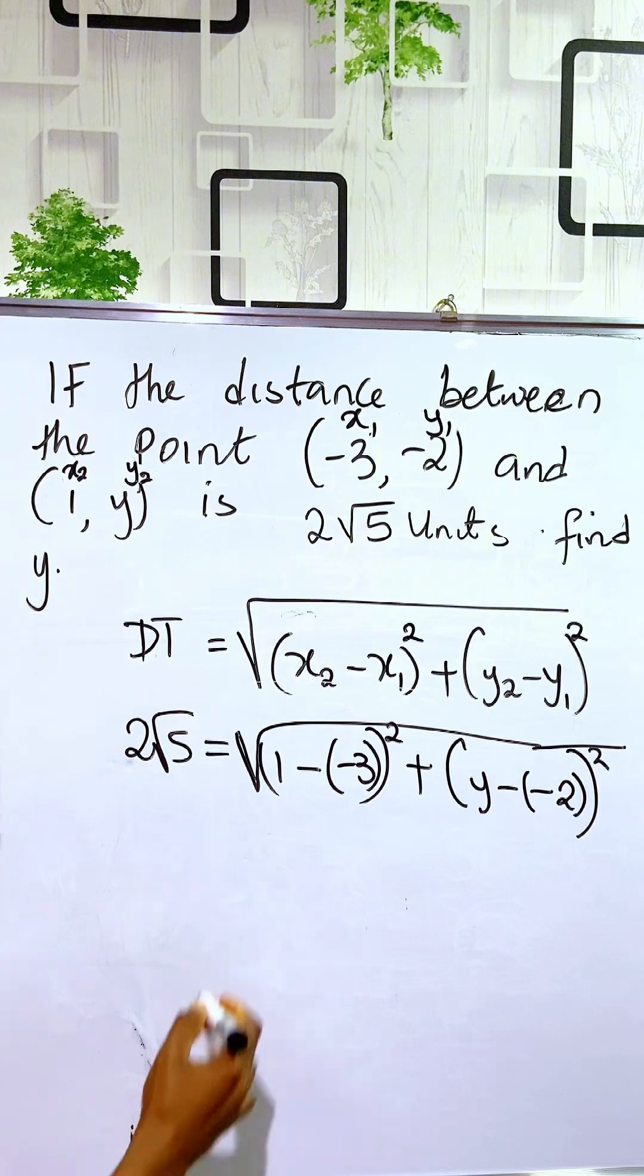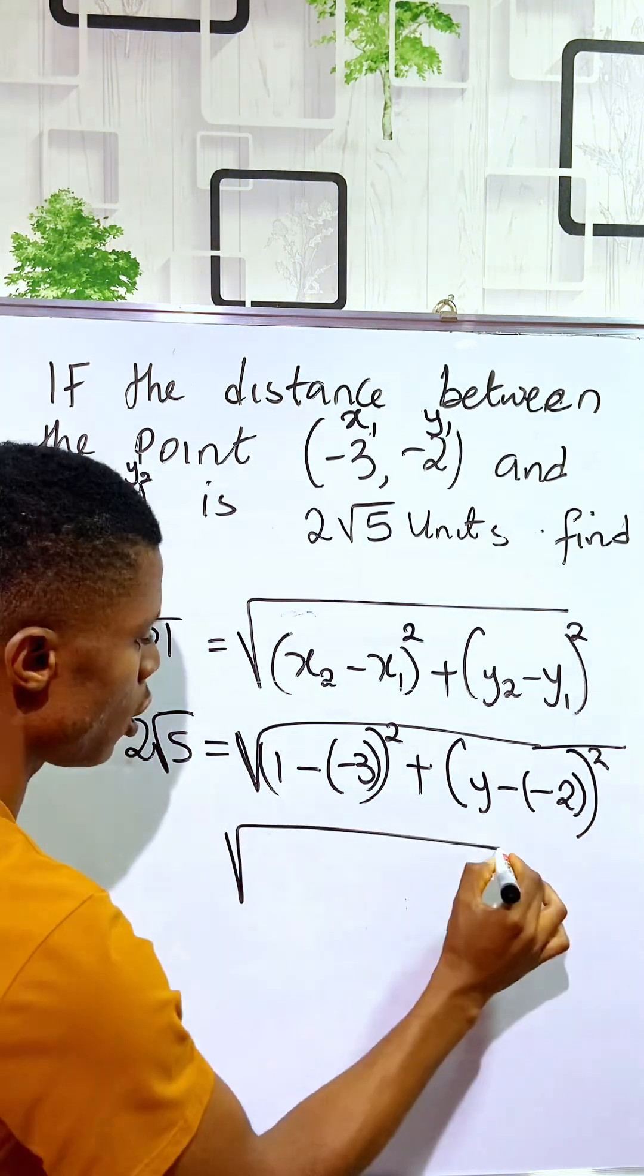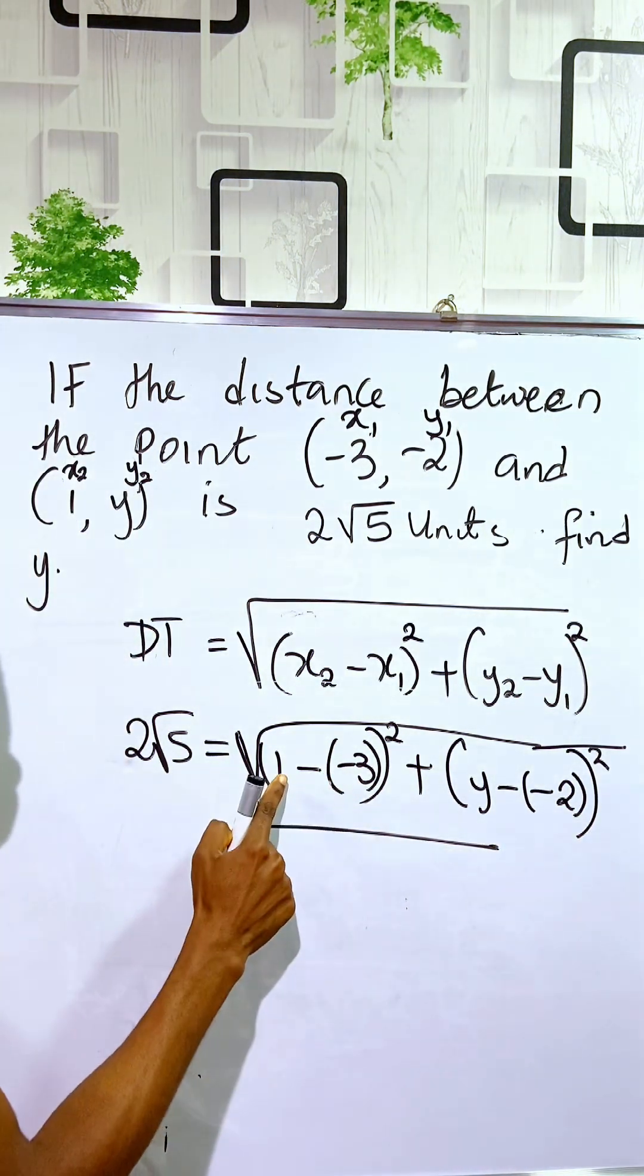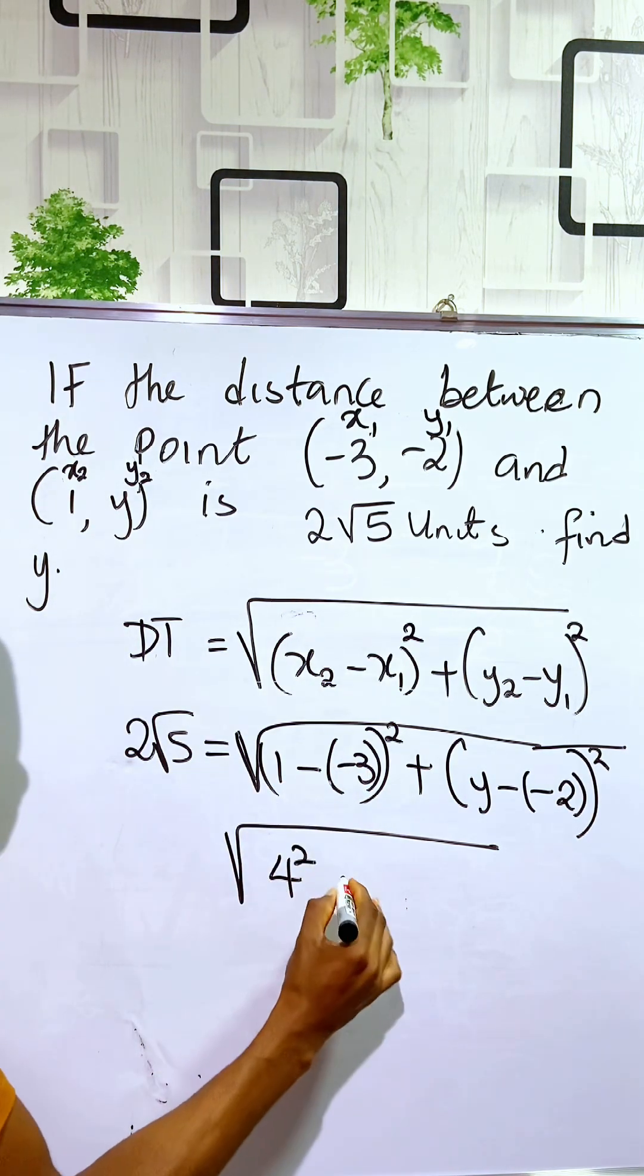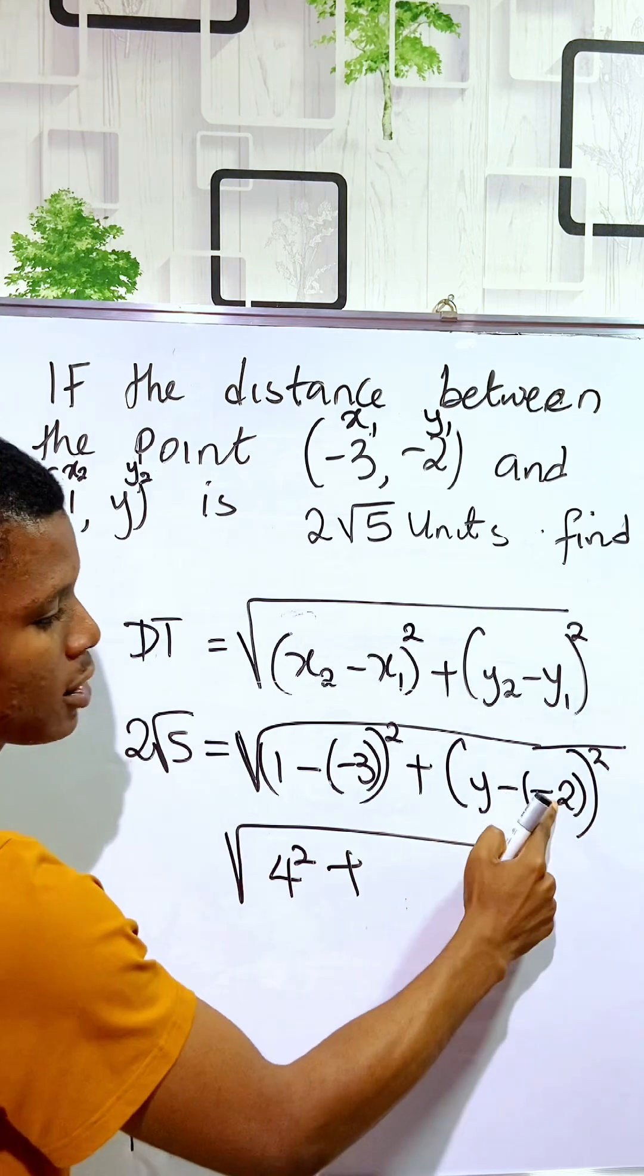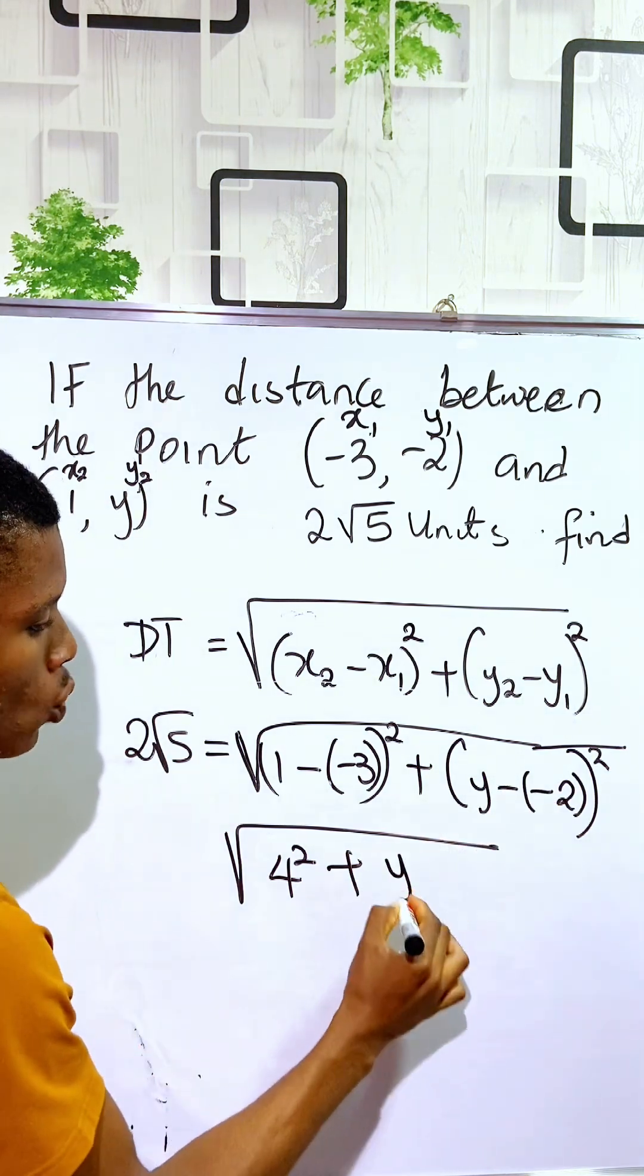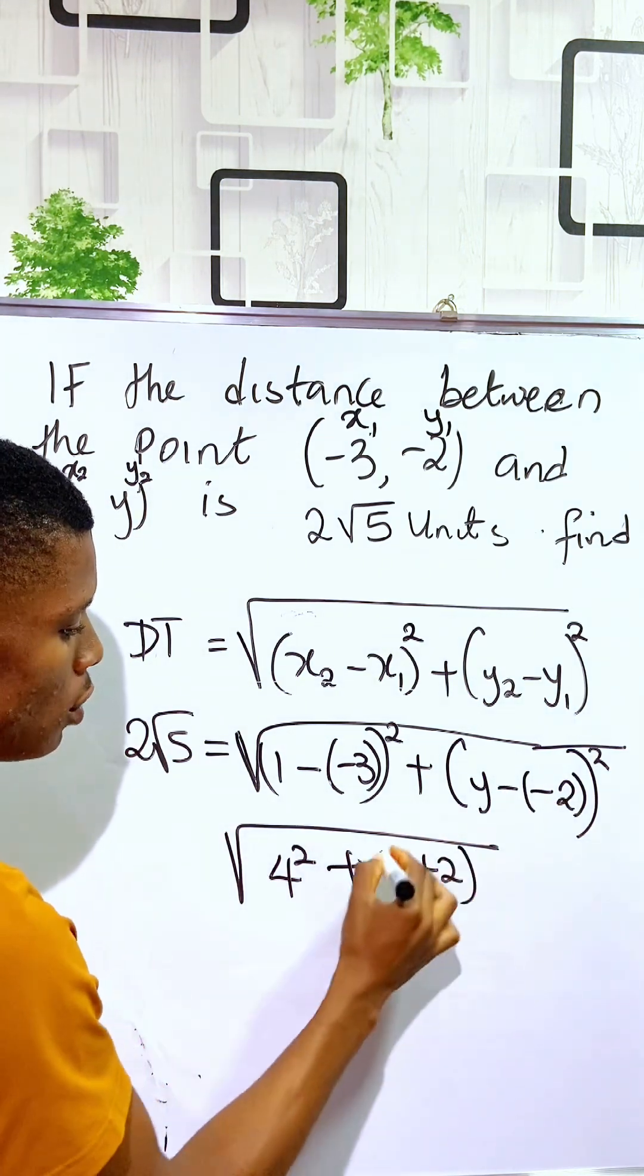So here let's simplify. This is the square root of 1 minus minus is plus, so 1 plus 3 is 4. We have it as 4 squared plus minus minus is plus, so we have it as (y + 2) all squared.